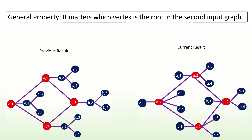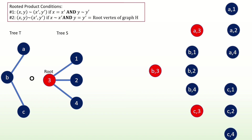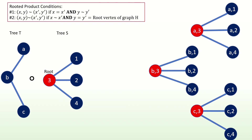To demonstrate another useful property of rooted products, let's take the rooted product of these two trees, t and s, with s's root vertex being vertex 3. First, find the vertex set. Next, find all the adjacencies that come from our first condition. Then find all the adjacencies that come from our second condition. The resulting graph is still a tree — that is, it's an acyclic connected graph. This is because the rooted product does not produce cycles when its input graphs are acyclic, and it's straightforward to show that the rooted product of two connected graphs is connected.